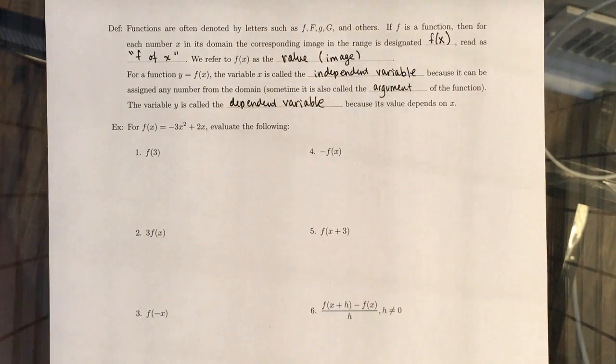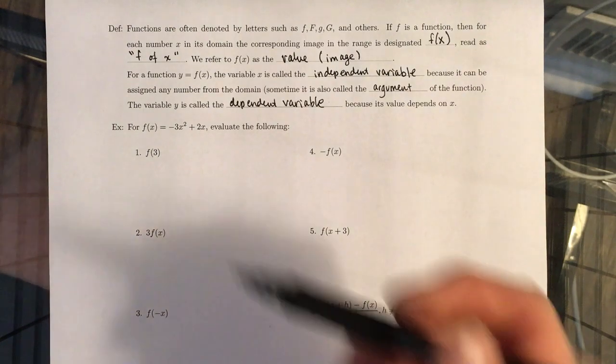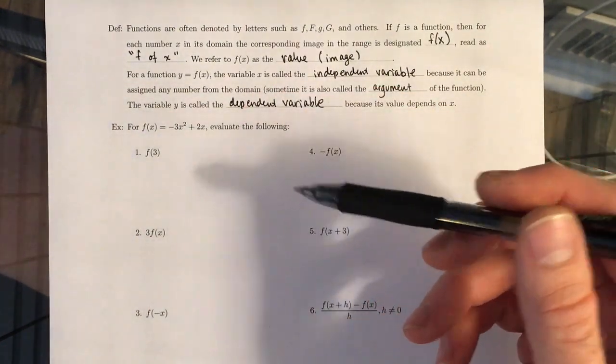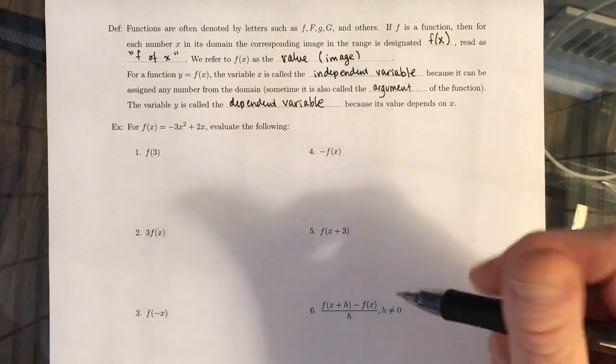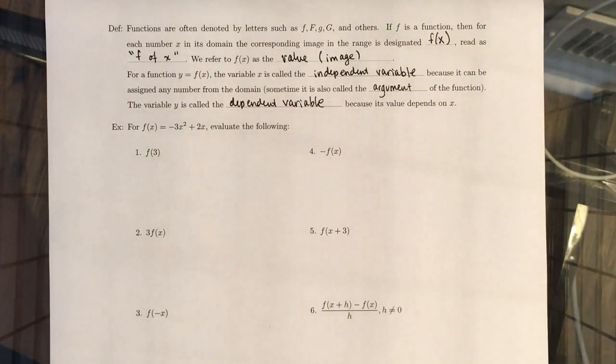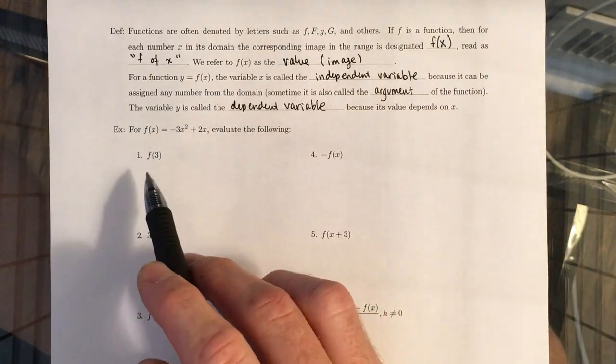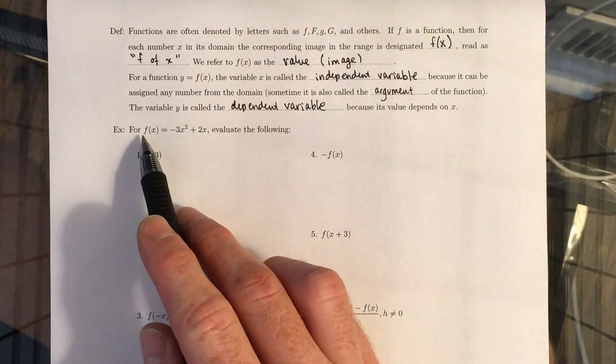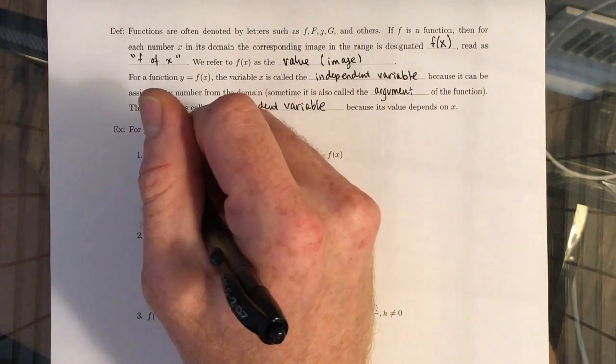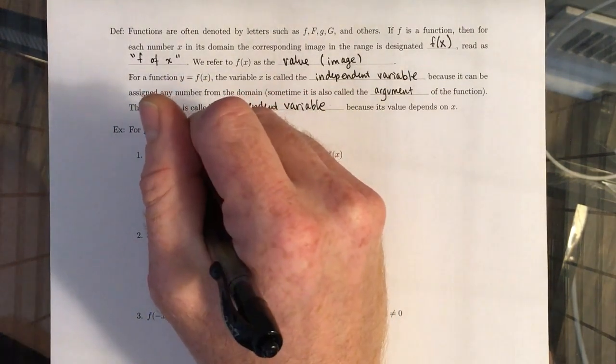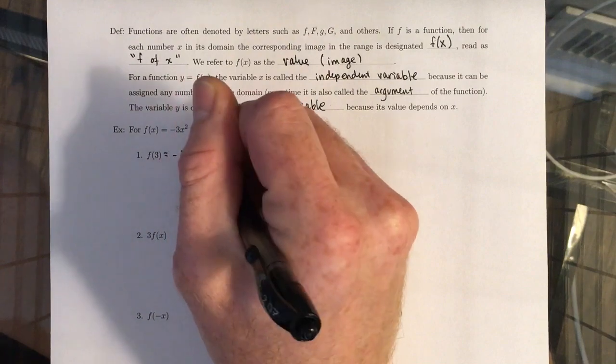So we're just going to run through these six examples here. Our function F of X is defined to be negative 3X squared plus 2X. We want to evaluate the following. This first one is asking us to evaluate the function at X equals 3.